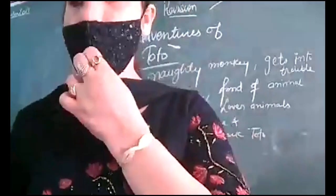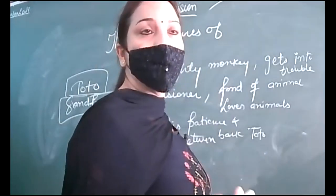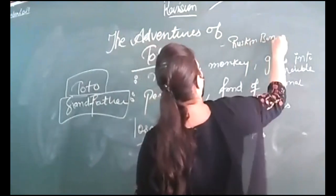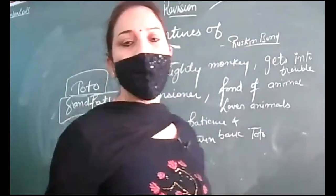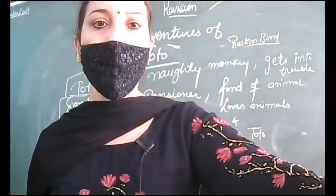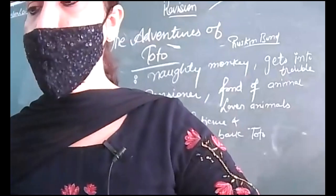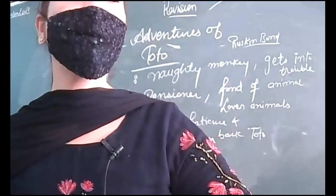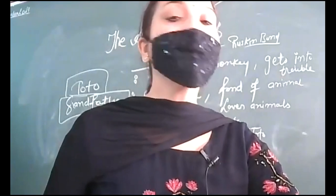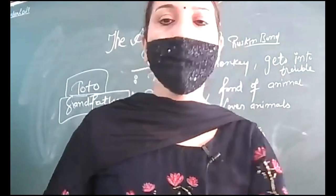This chapter is written by the very famous writer Ruskin Bond — such MCQs can also be asked, so you should be ready. Ruskin Bond is the narrator; he is narrating the whole story, telling about Toto and Grandfather. There is a pretty monkey whose name is Toto, and it was purchased by the narrator's grandfather.